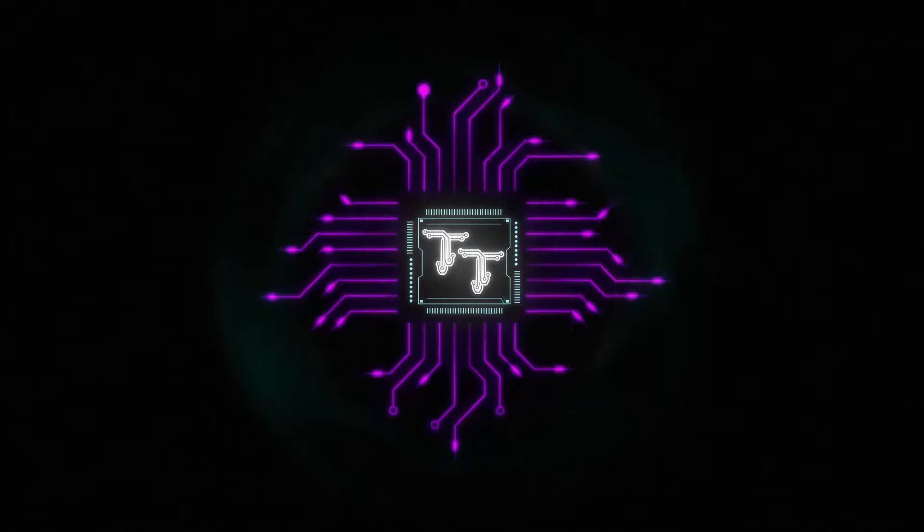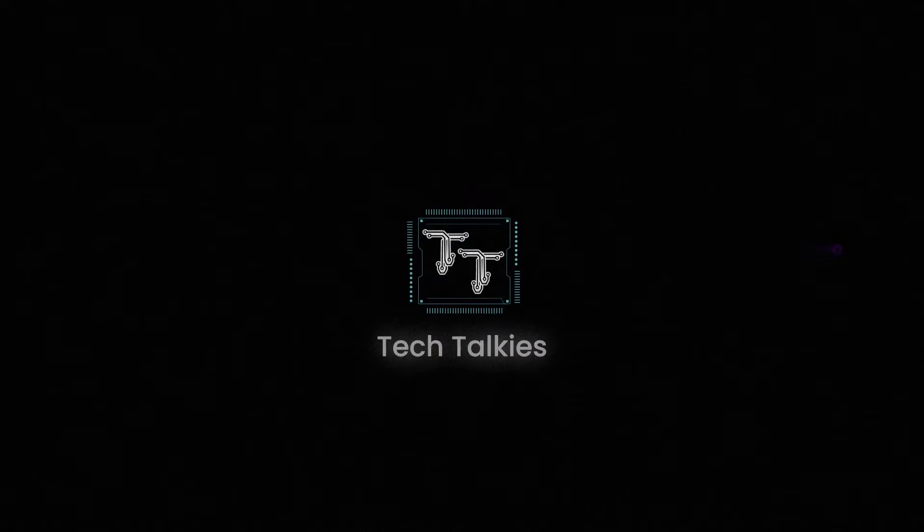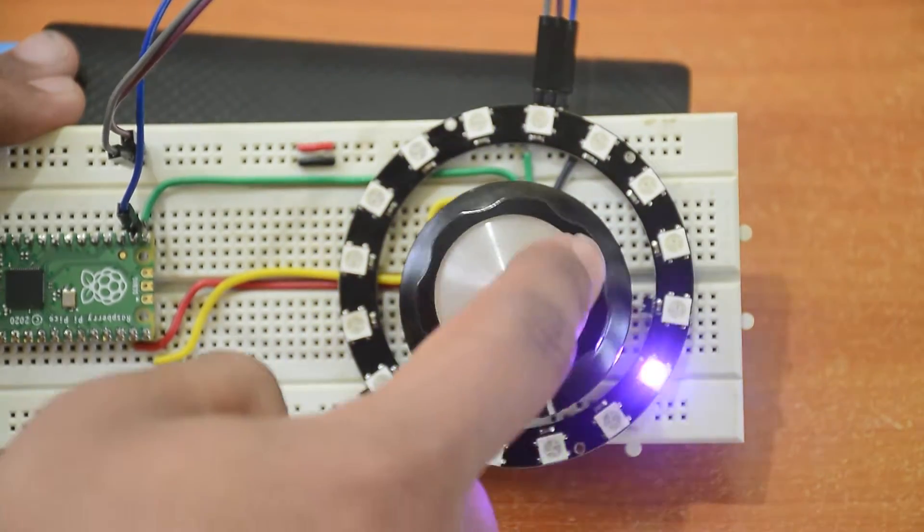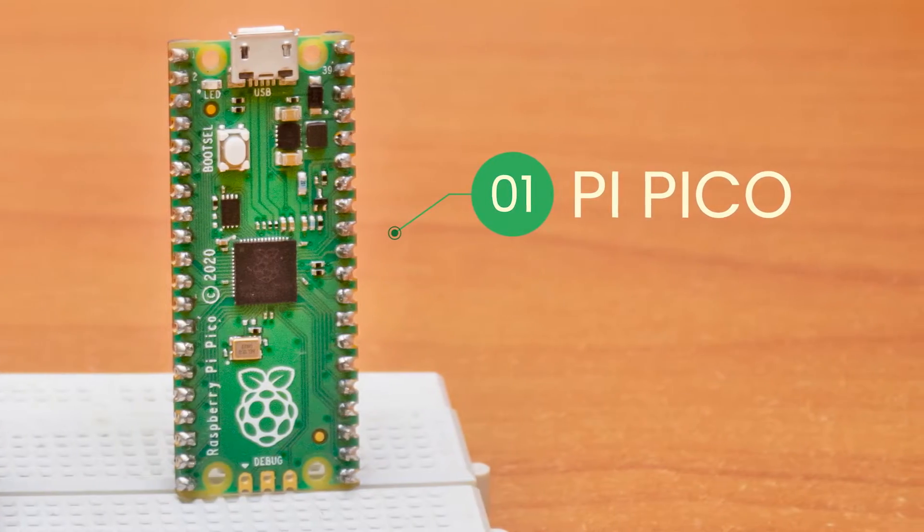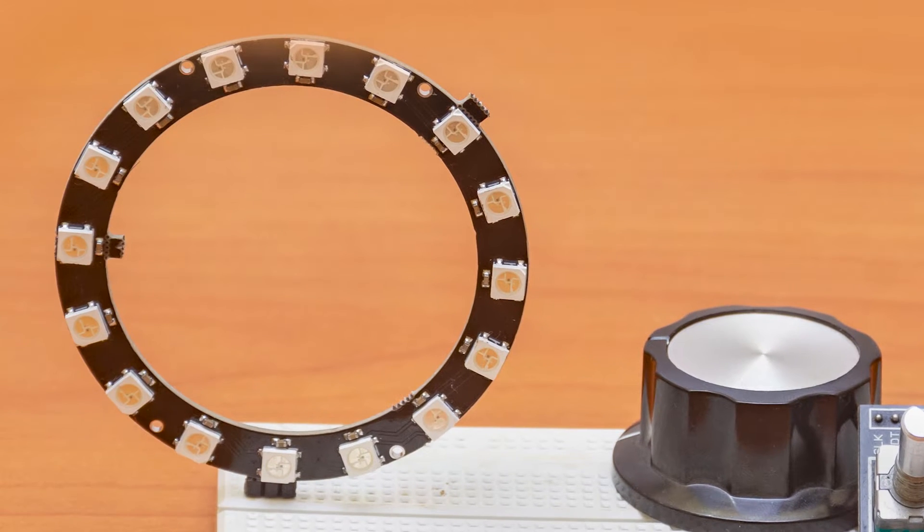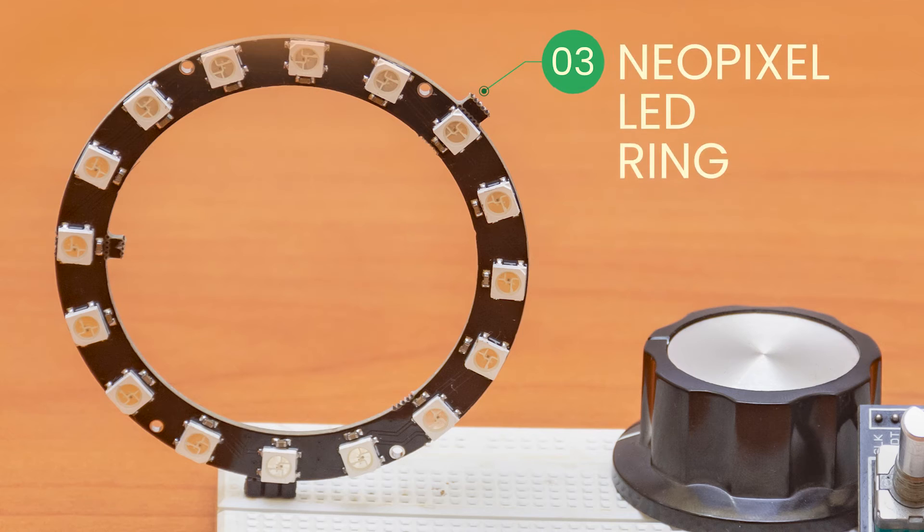Hello everyone, welcome back to Tech Talkies. In this video we are going to make this rotating RGB gadget. We will need a Raspberry Pi Pico, a rotary encoder and knob, and a NeoPixel ring of any size.